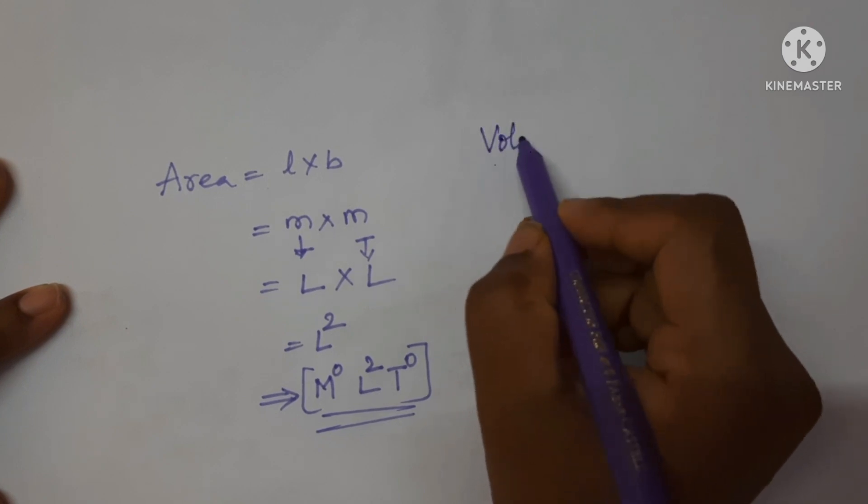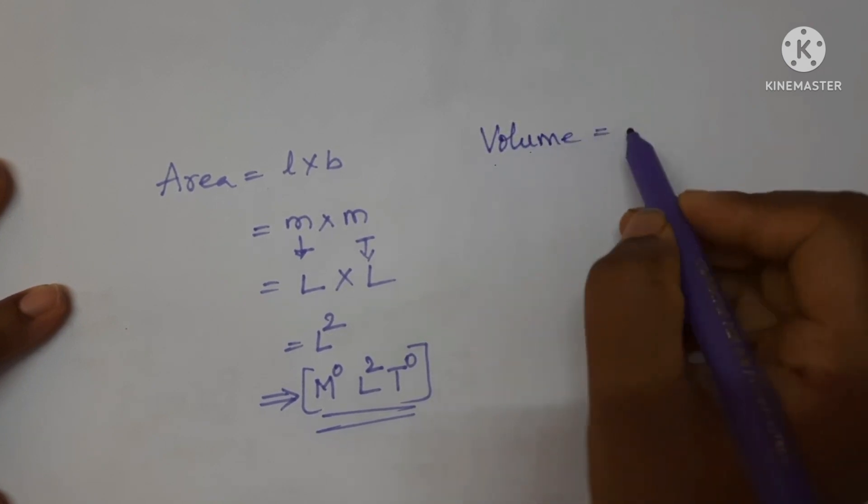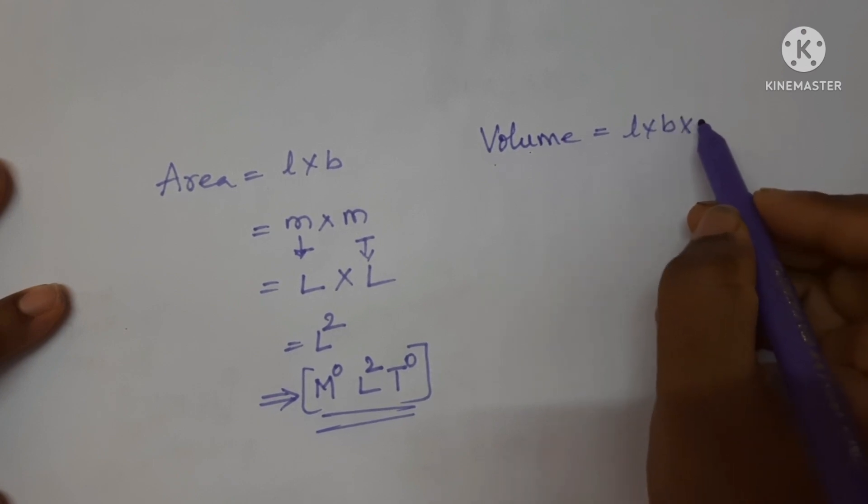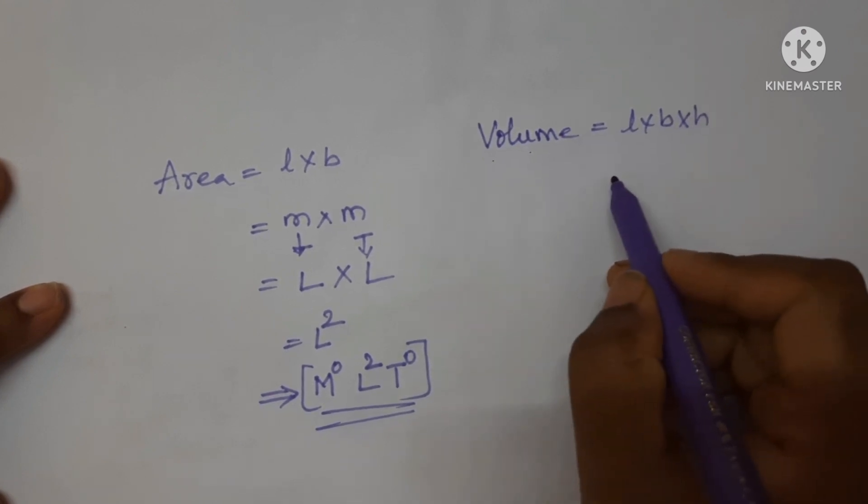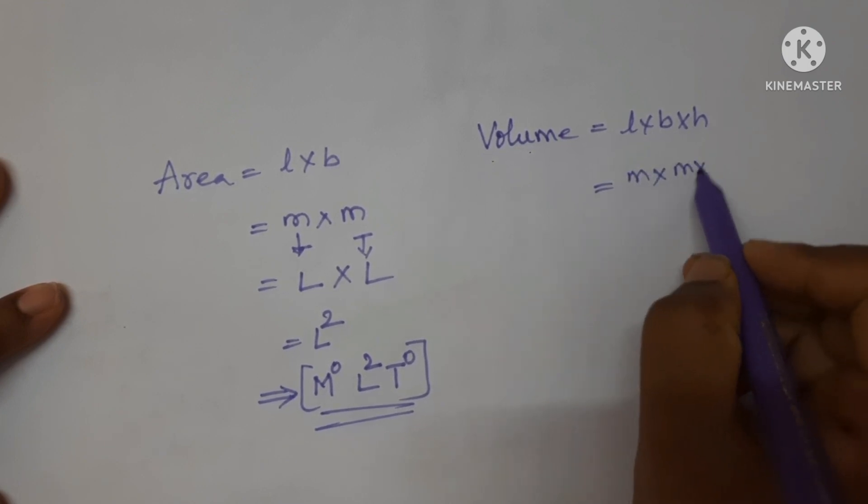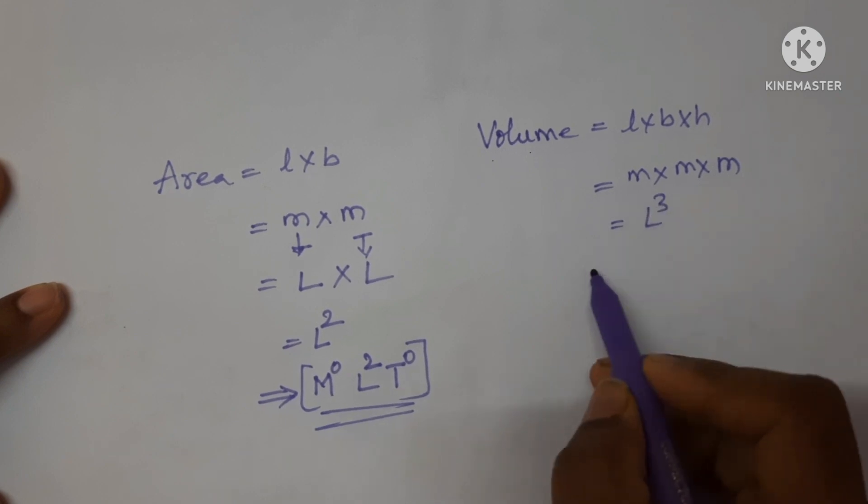Let's see for volume. The formula is length multiplied by breadth multiplied by height. The SI unit for length is meter, for breadth meter and height is meter, which equals L cube.